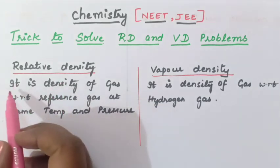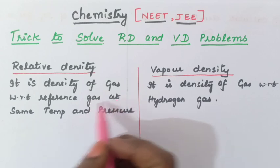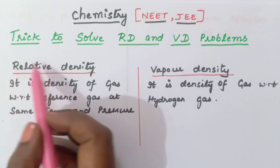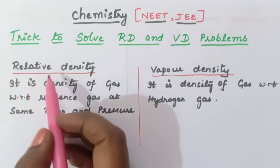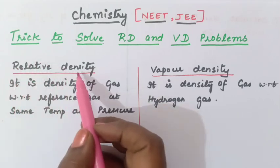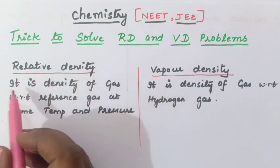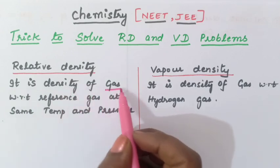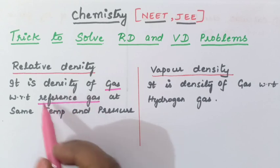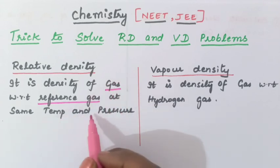Relative density — the definition is: it is the density of a gas with respect to a reference gas at the same temperature and pressure. Remember that 'relative' means comparison — whenever we are comparing two different gases. So the density of two different gases we are comparing. Here it is the density of a gas with respect to a reference gas, and that reference gas can be any gas at the same temperature and pressure.